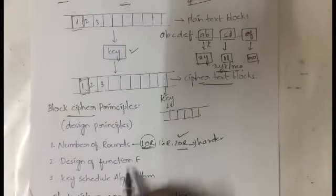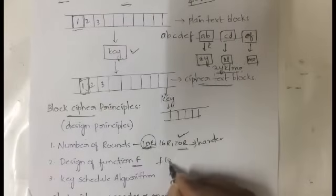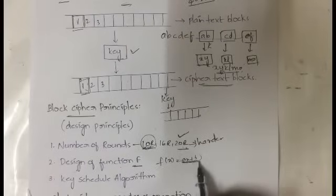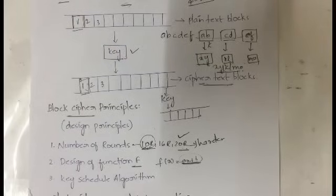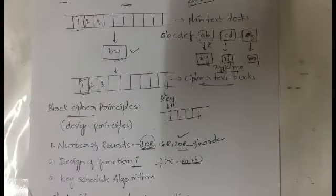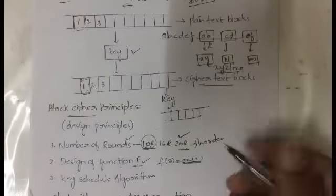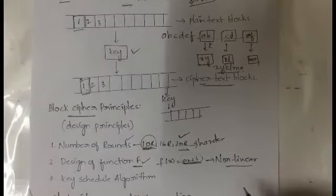The second design principle is the design of function F. You will be designing a function, and that function should not be simple — like F(x) = ax + b. You must design a function F that is very complicated to understand. The harder the function, the more time it will take for the hacker to decode or break the algorithm. You can take non-linear functions instead of linear functions. Non-linear functions are much harder to break compared to simple linear functions.